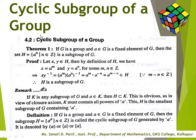The next point is cyclic subgroup of a group. We know that every subset containing A need not be a subgroup of G. We are interested to know whether there exists a subgroup of G containing A. Here we state a theorem: if G is a group and A belongs to G is a fixed element, then the set H = {Aⁿ : n ∈ Z} is a subgroup of G.